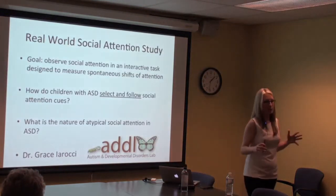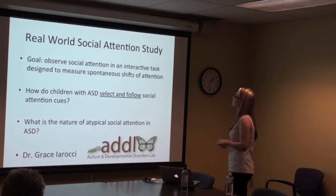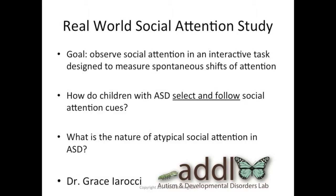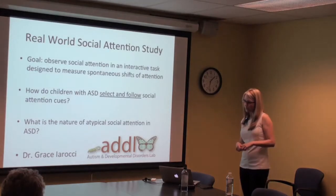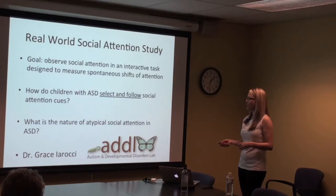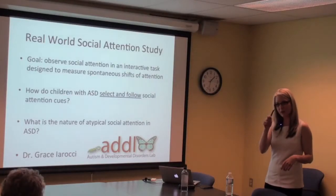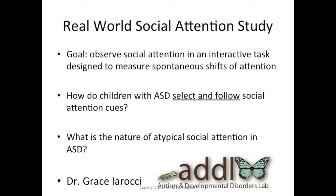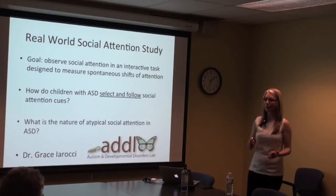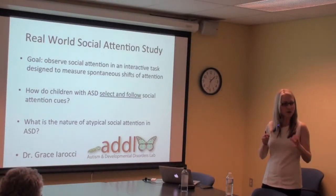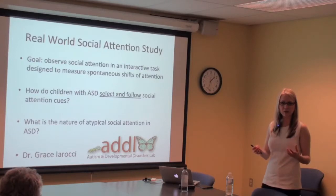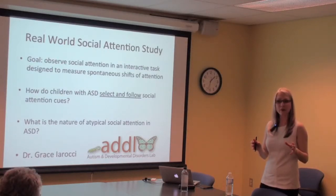The goals of this study were to observe social attention in an interactive task designed to measure spontaneous shifts of social attention in a natural setup, with no artificial nature to the cues. One of the main questions was: how do children with ASD select and follow social attention cues? Is atypical social attention in ASD present at both stages, or just one? Does one stage affect the other? We were trying to measure these things separately in an ecologically valid setting.